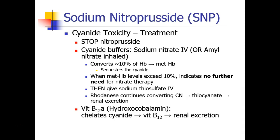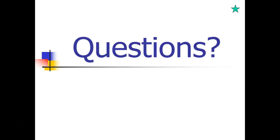One other treatment for cyanide toxicity is vitamin B12, which can chelate cyanide and lead to renal excretion. So those are the two nitrate compounds we commonly use as vasodilators — nitroglycerin and sodium nitroprusside. We'll stop here; let me know if you have any questions, and we'll continue again with the next video.